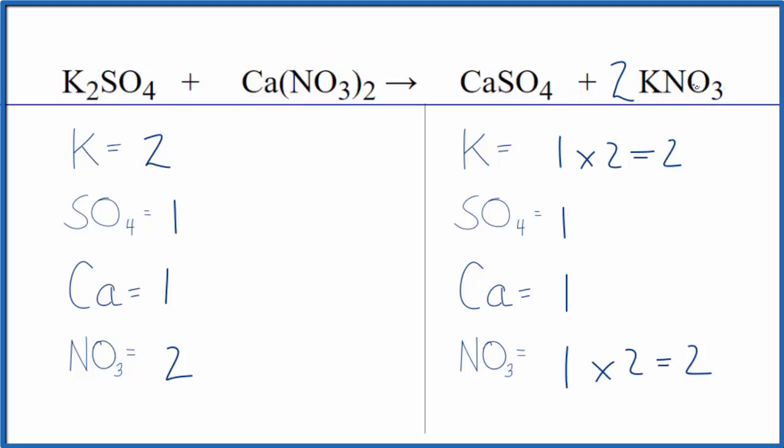In this reaction, everything is going to be aqueous except this calcium sulfate here. This is going to be a precipitate. A little bit will dissolve, but most of this will be a solid, and that means it'll be a precipitation reaction. This will fall to the bottom of our test tube as a precipitate.